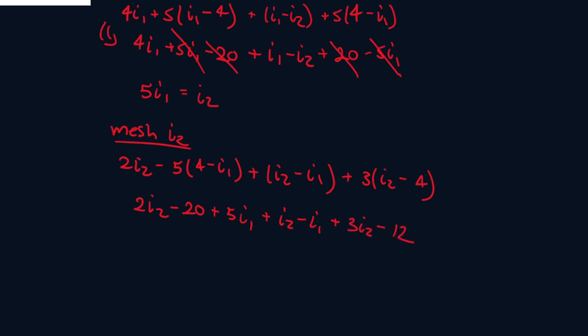So let's collect like terms. So we have 5I1. Then we have 4I1 because this and this. Then we have this, this and this. So 2 plus 1 plus 3. That's 6I2. Then we have this and this. So minus 20 minus 12. So that's minus 32. So let me double check everything quickly.